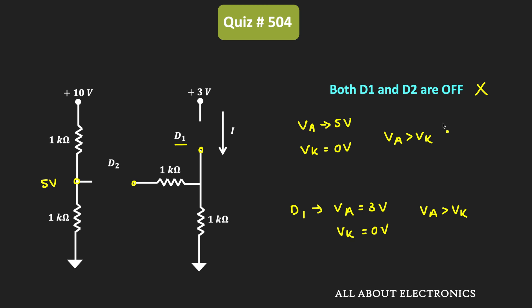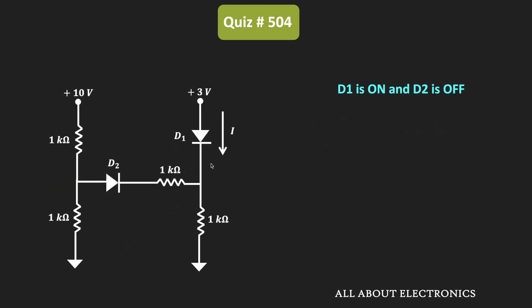Now let us consider the condition where diode D1 is ON while diode D2 is OFF. Since the diodes are ideal, D1 will act as a short circuit while D2 will act as an open circuit. In this condition, since these two resistors are not connected with any other circuit, the voltage at this node will still be equal to 5V.